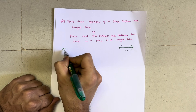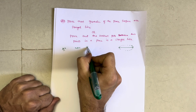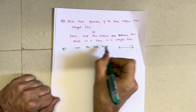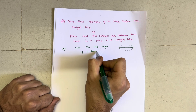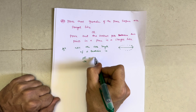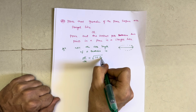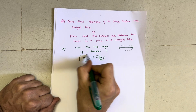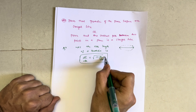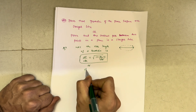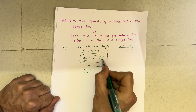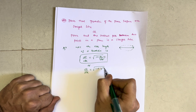Let's begin the solution. We know the arc length of a geodesic is given by ds/dx = √(1 + (dy/dx)²). This is the equation you have to remember: ds/dx equals the square root of 1 plus dy/dx whole square.